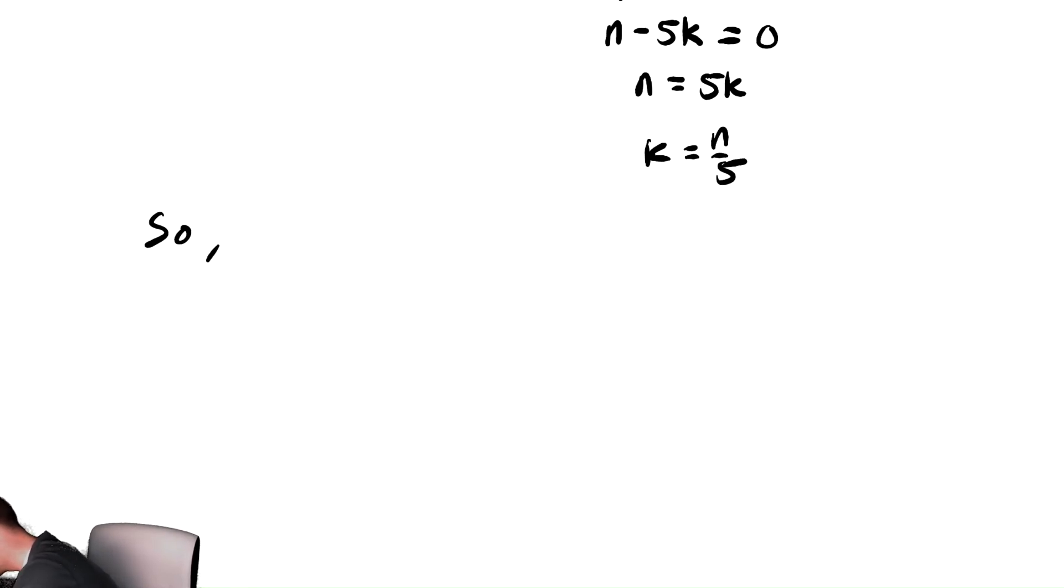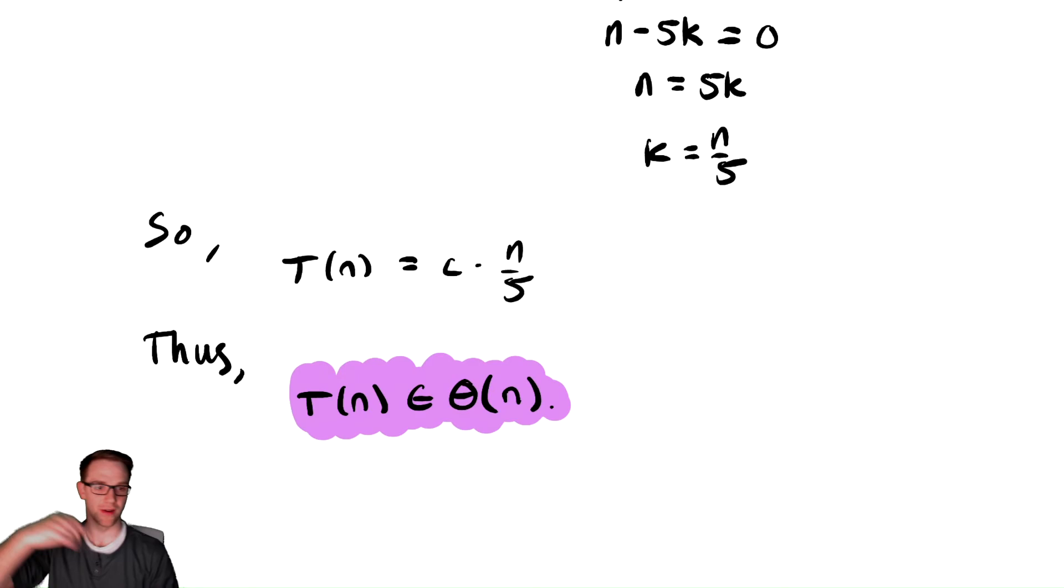So T of n, again, every iteration takes constant time in this case. So we have that that's c times k, which is n divided by 5. Thus, T of n is in theta of n. And again, this should be unsurprising, because the code here looks very similar to the code that we saw when we analyzed the addition. Subtracting and addition are inverse operations of each other, so we expect that they do roughly the same thing when involved in the code.